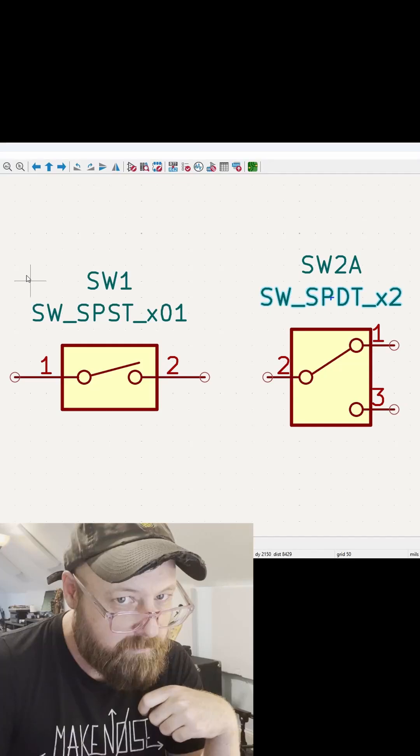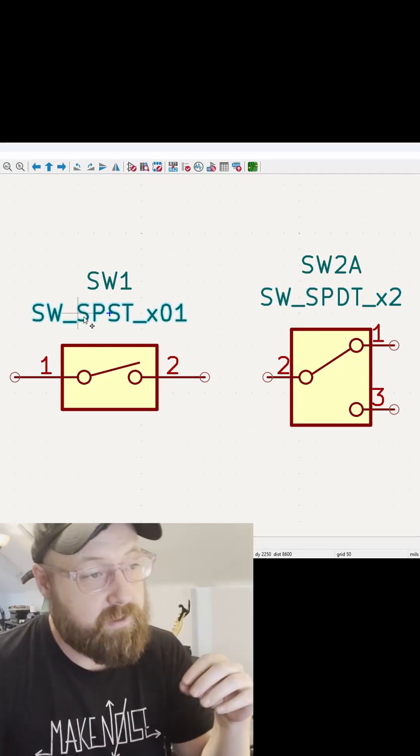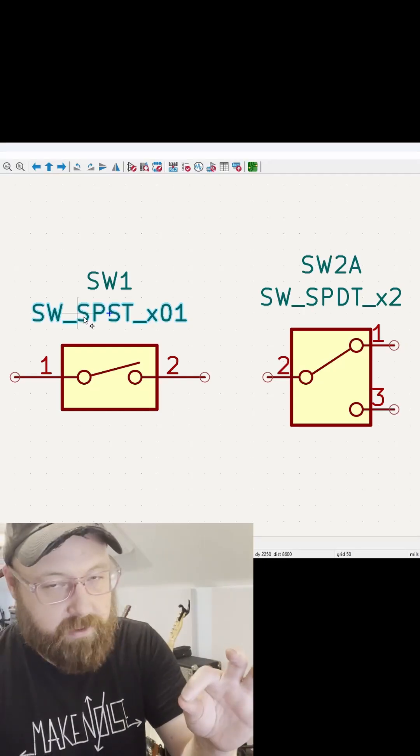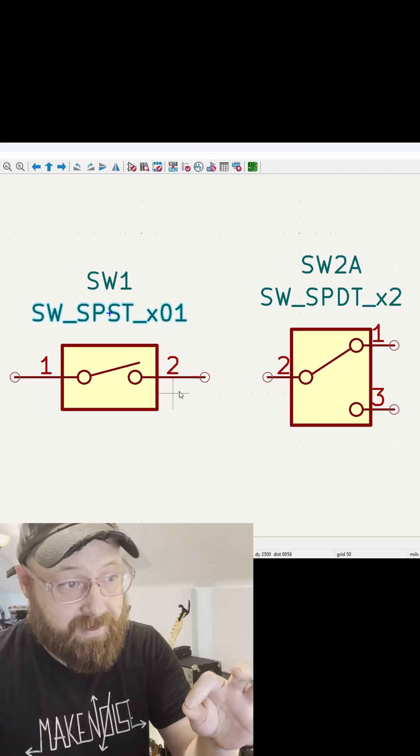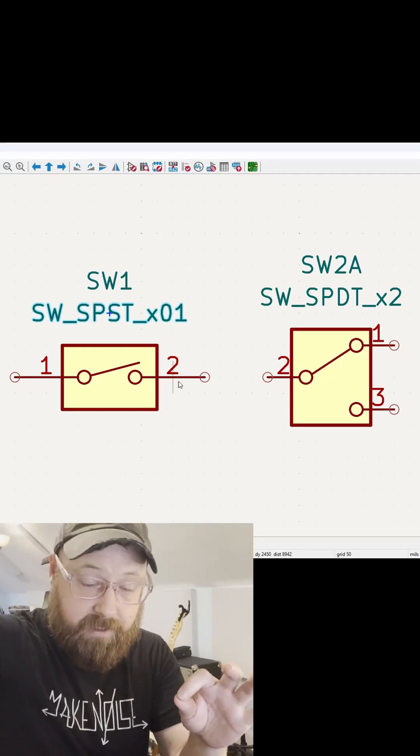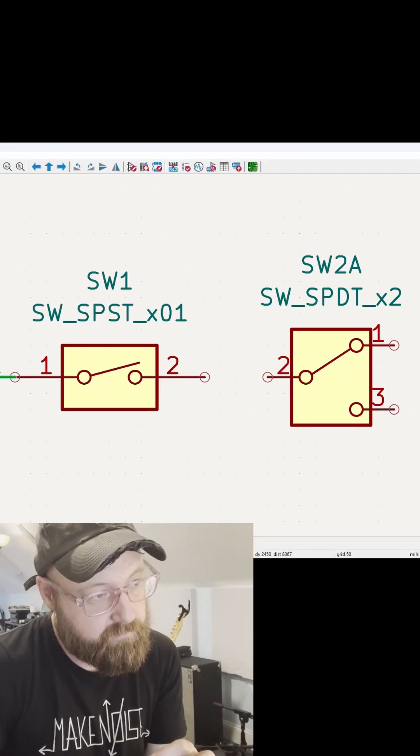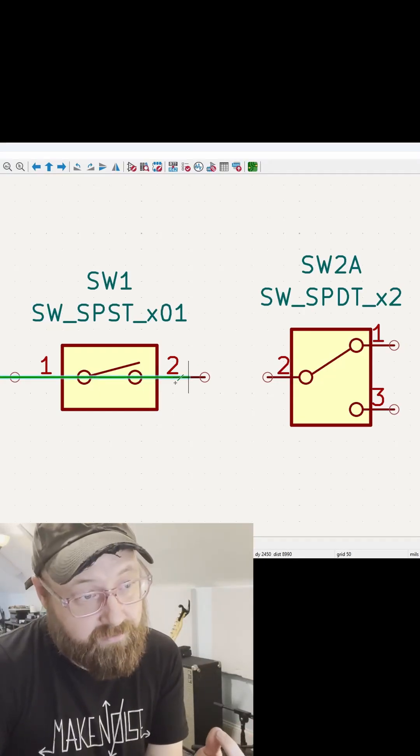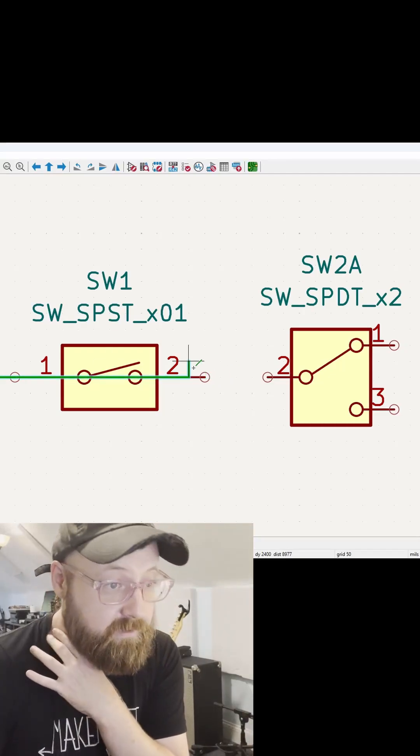Single pole double throw. It's pole, not pole. So what that means, single pole means basically you can imagine a single connection coming into the switch. And then single throw is how many places we can send that signal to. So here we have a single pole as in our line comes in to that one spot and it either sends it to this output or it doesn't. So it's a single pole, single throw.